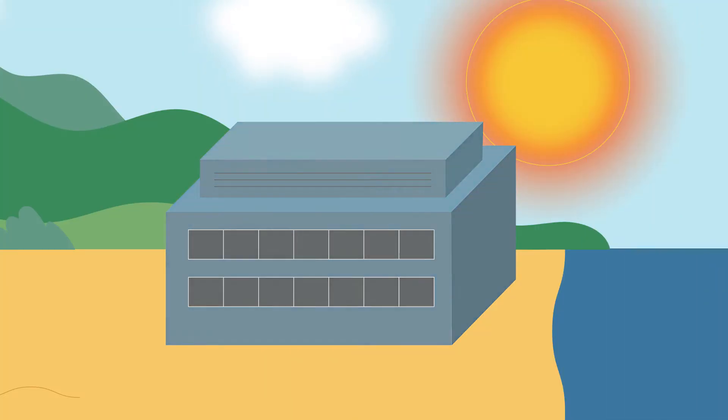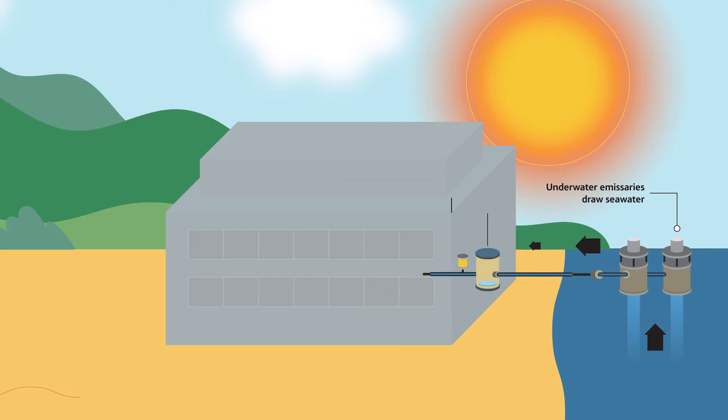Let's look at the process overall. Water is taken from the sea and receives a first treatment to eliminate impurities, oil, seaweed, rubbish and so on.